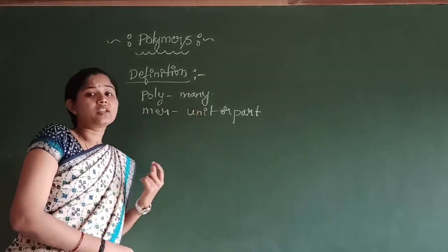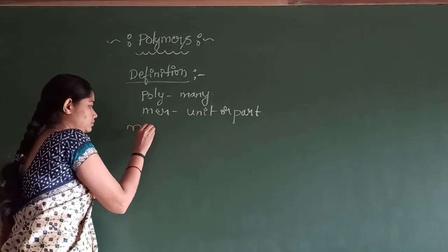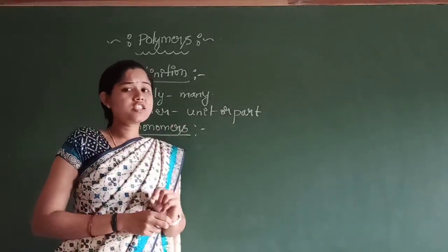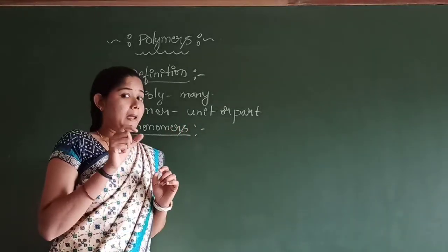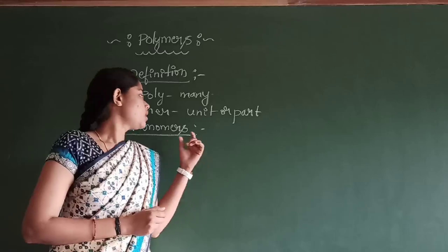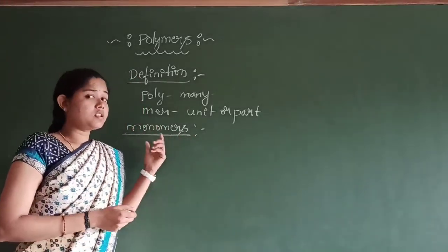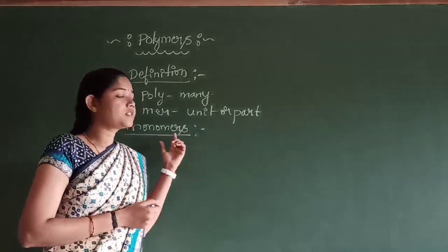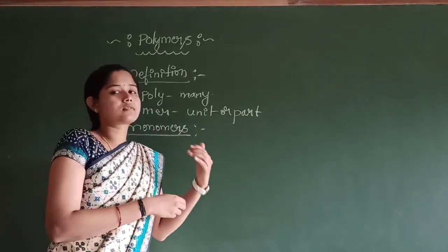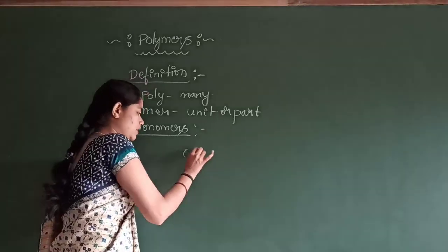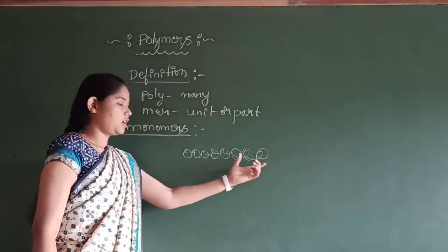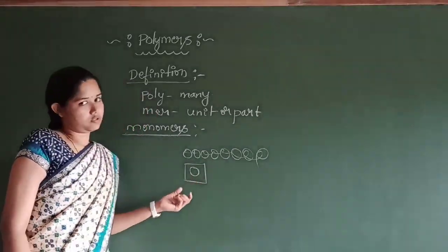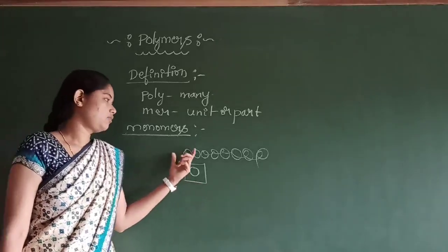These many individual units are nothing but monomers. The individual small molecules from which a big polymer molecule is formed are known as monomers. Monomers are also defined as the simple repeating structural units of polymers.